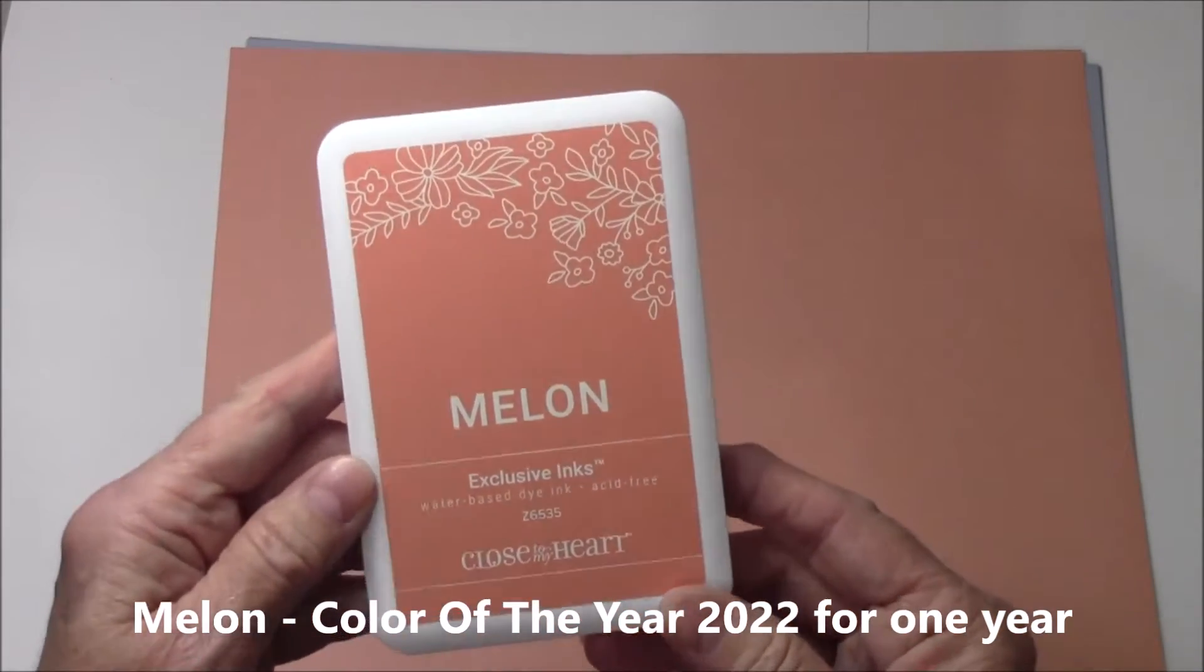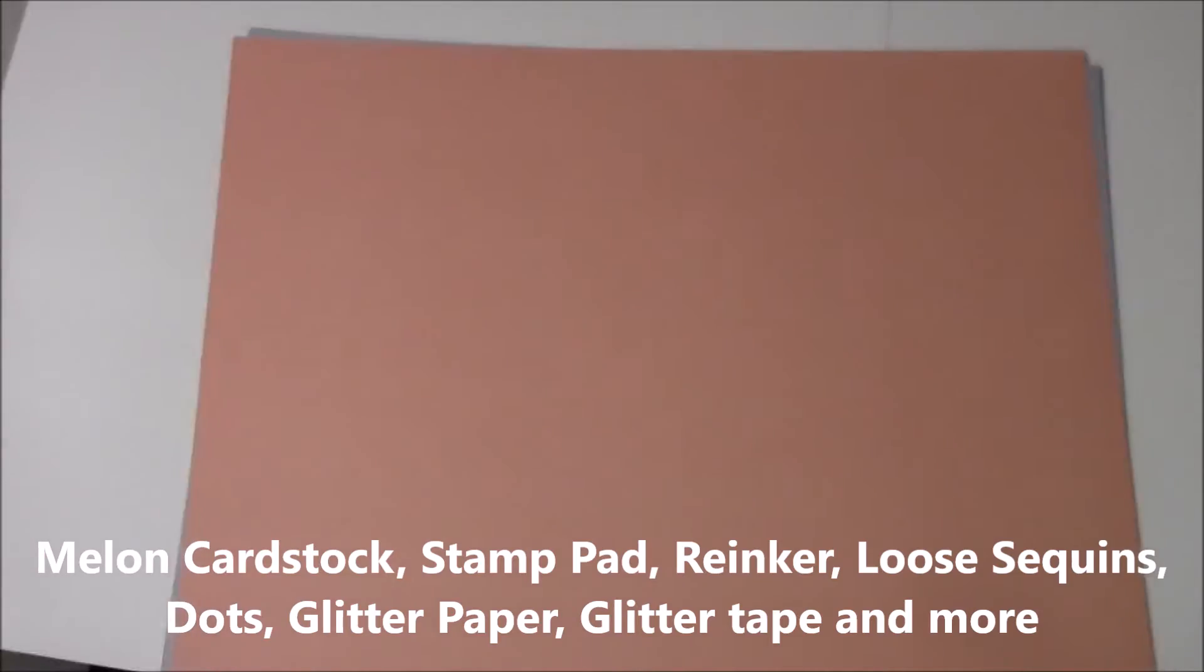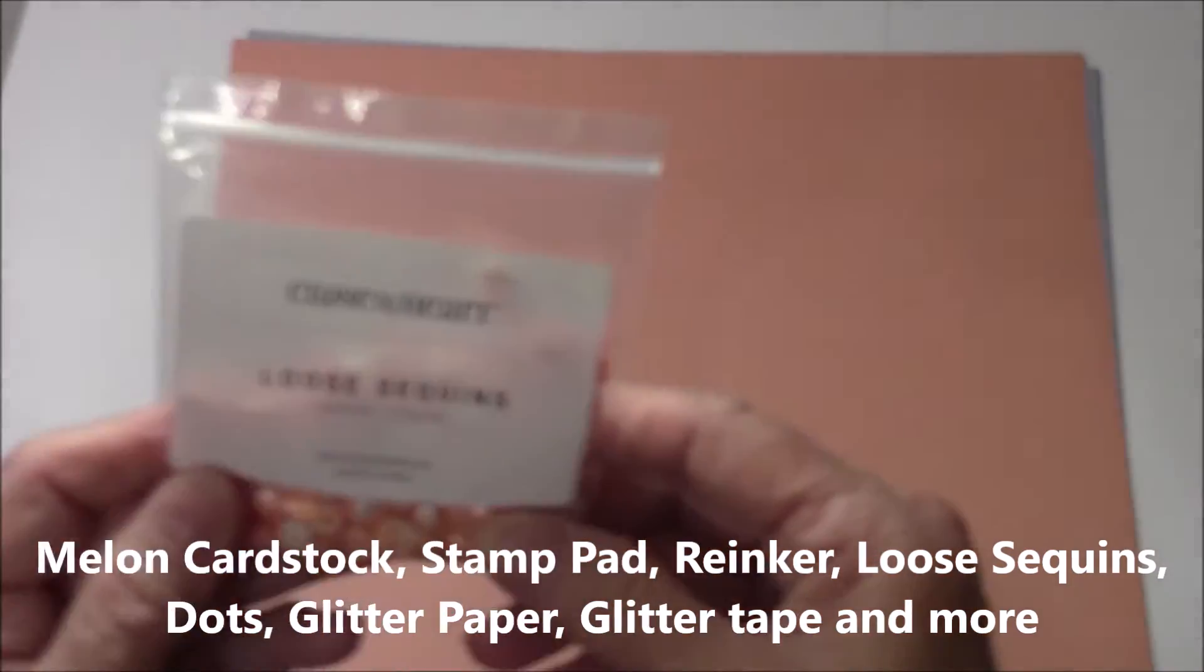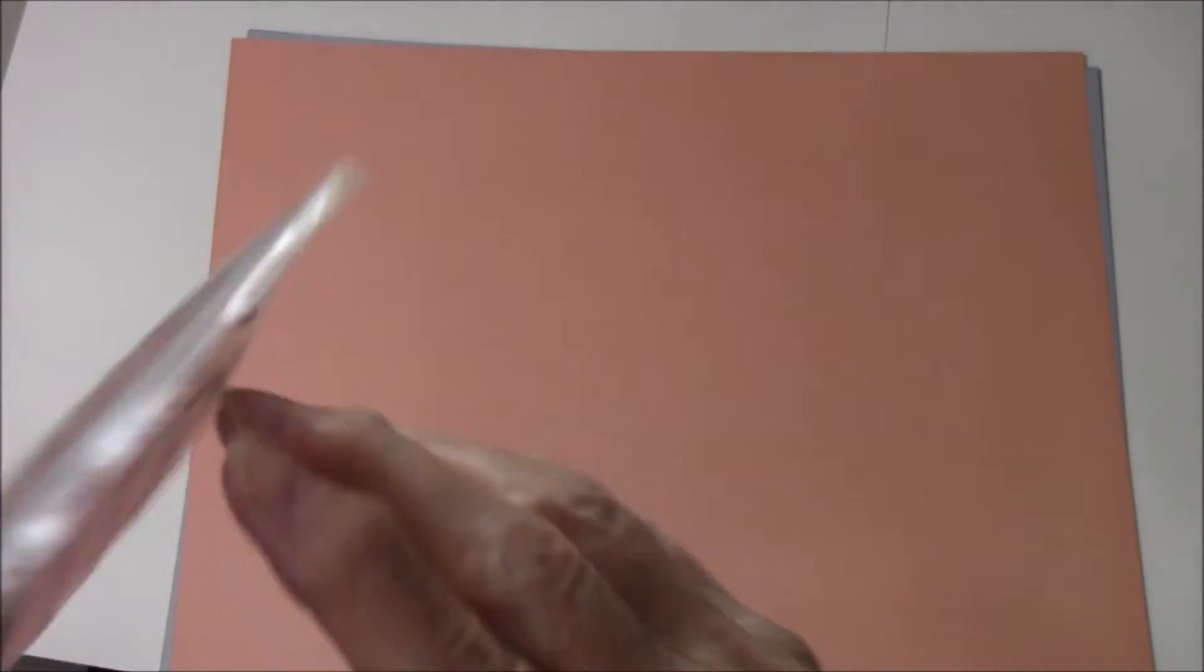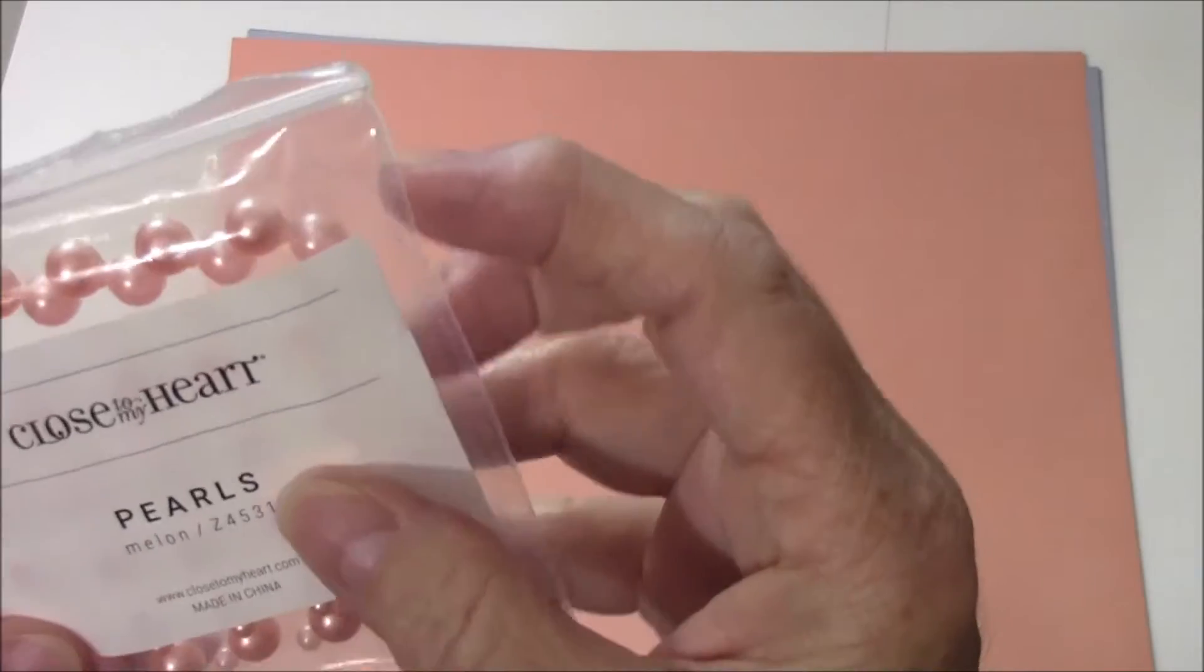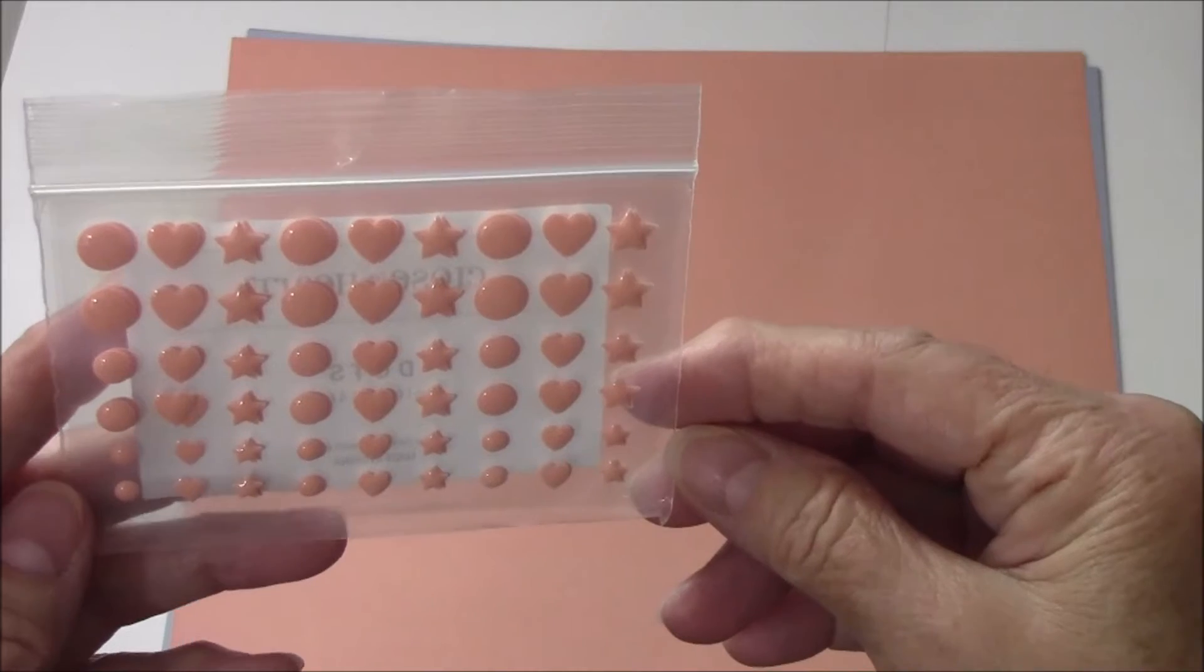The first one is the melon, which is our color of the year and it comes with lots of products. This is the melon ink pad and there's a reinker which I own but I didn't want to pull it out of my container. Melon also has the loose sequins which are gorgeous, absolutely gorgeous, and they have the pearls which are also gorgeous.